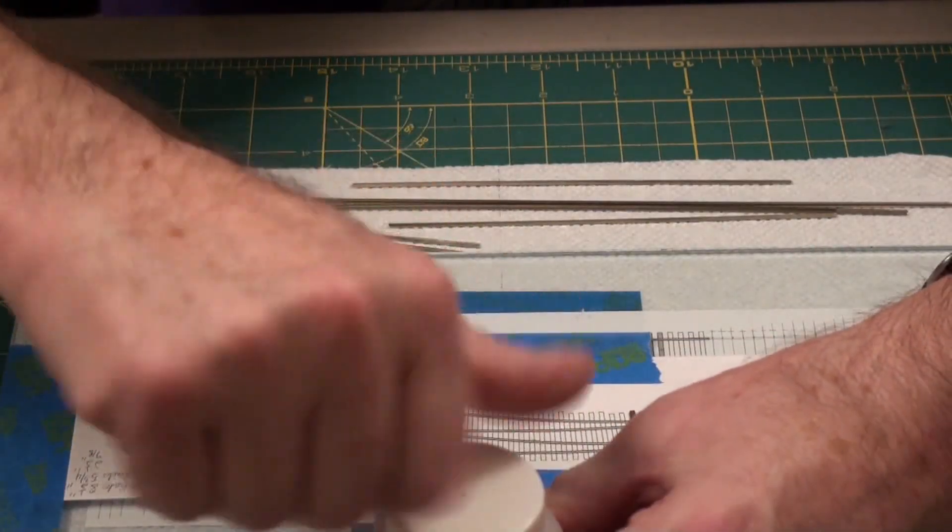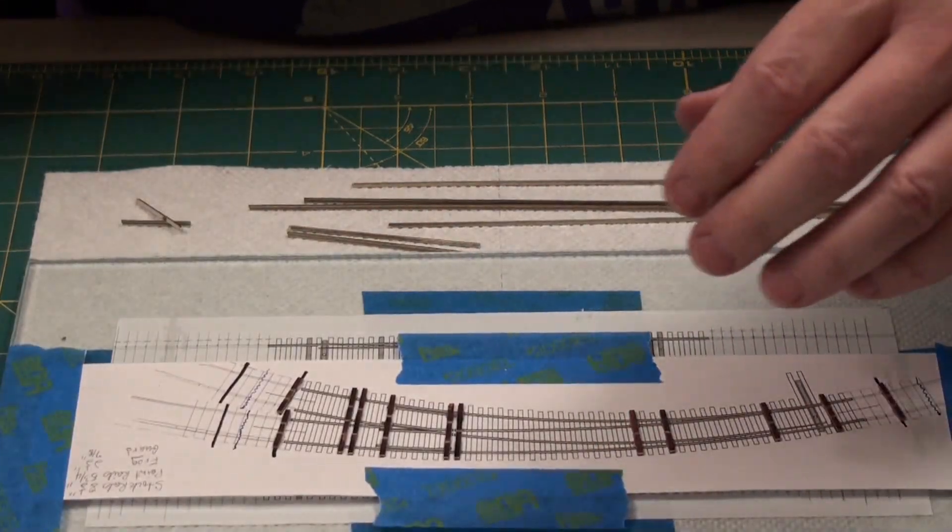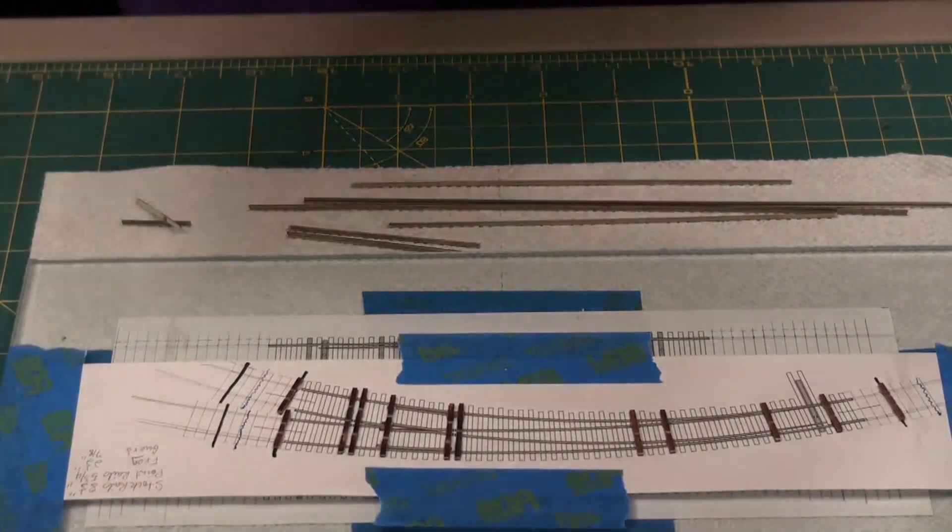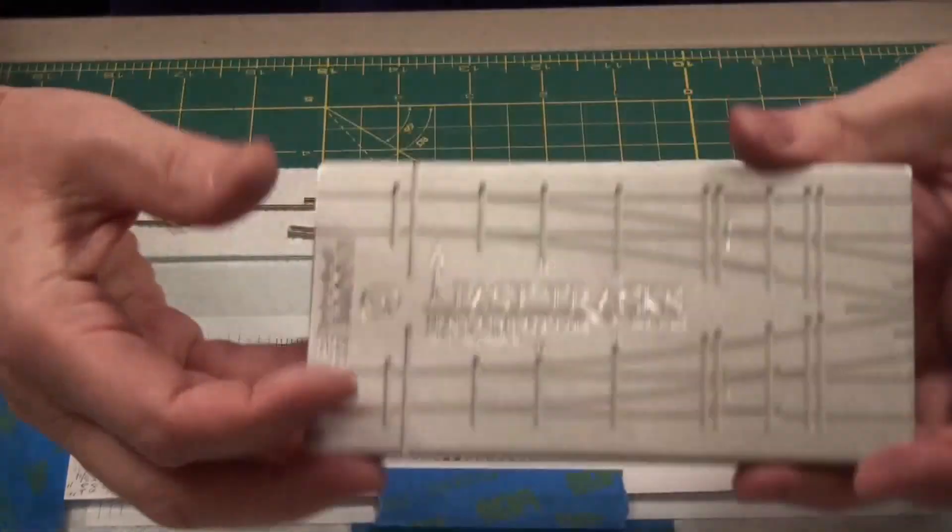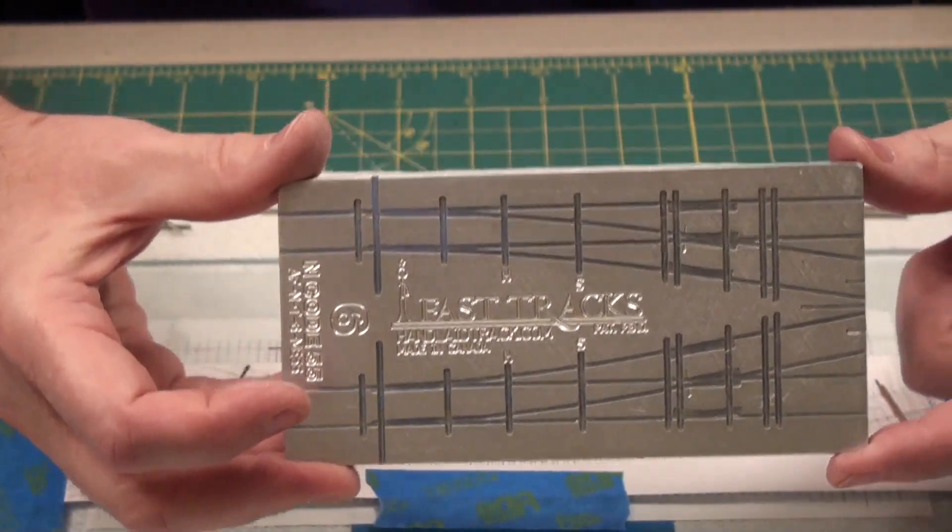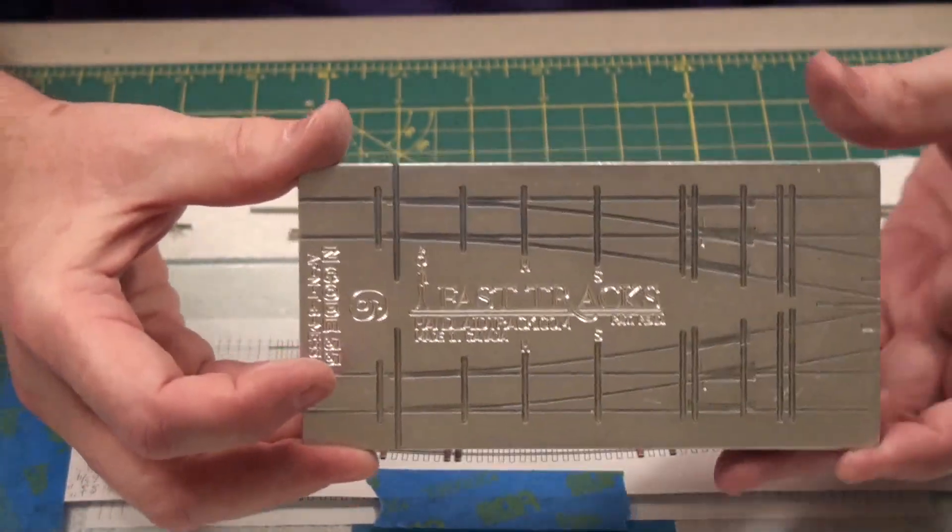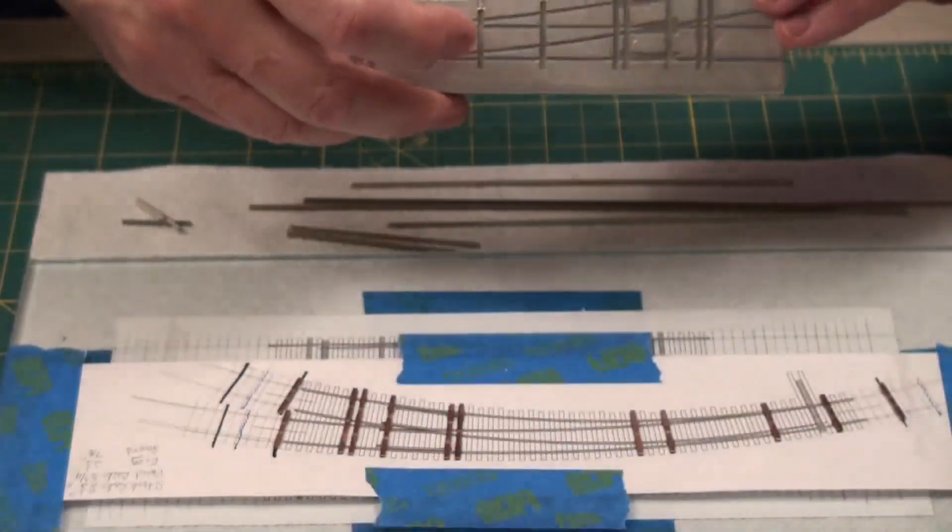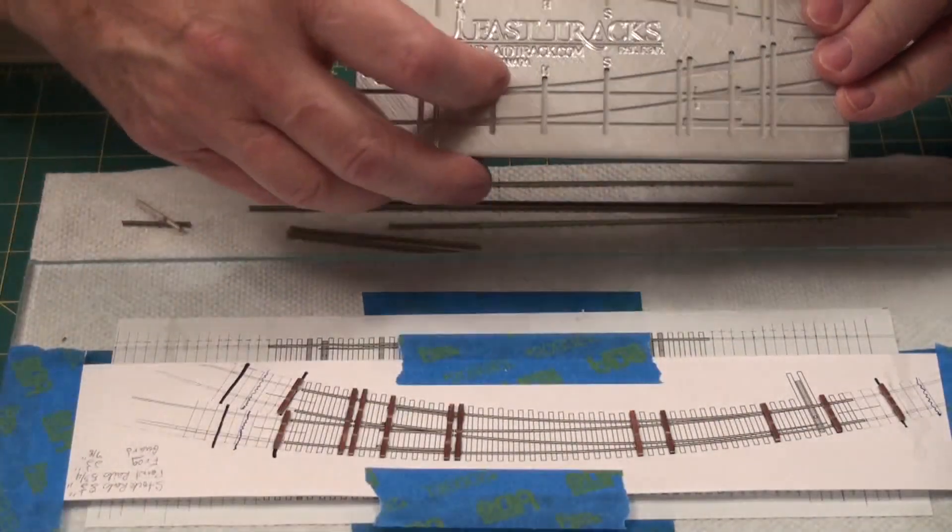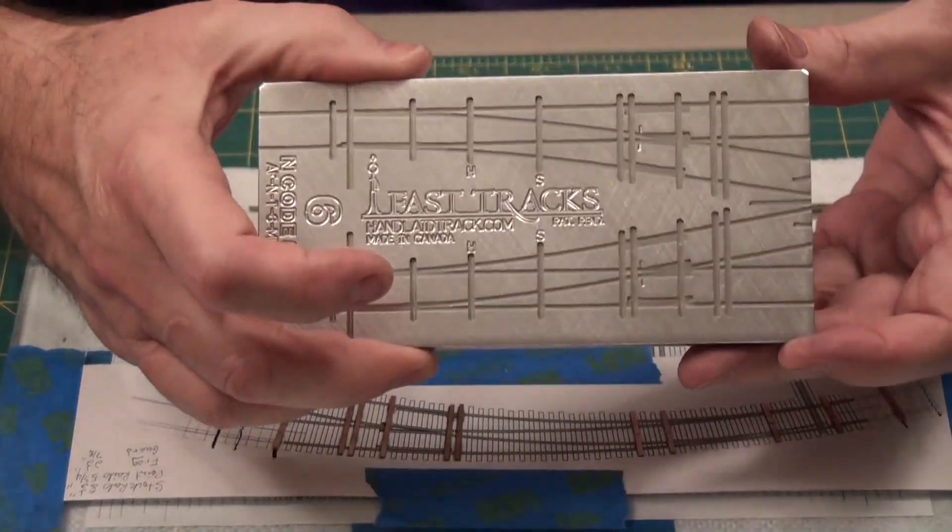We'll put the rag away. We'll put the isopropyl alcohol away. When you're constructing normal turnouts you can, from fast tracks, you can buy a jig like this. So you'll use this which of course holds all of the ties and holds all of the rails. We don't have that luxury here. But I can use parts of this.